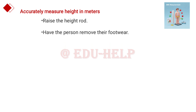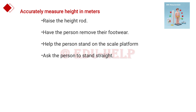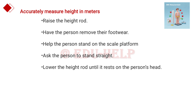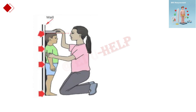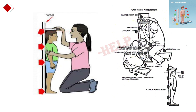To accurately measure height in meters: raise the height rod of the stadiometer. Ensure the person has removed their footwear and is standing on the scale platform. Ask the person to stand straight and look straight ahead. Lower the height rod until it rests on the person's head. Record the height and all values clearly and accurately, then put these values into the BMI formula. These pictures depict how height should be measured using the stadiometer.